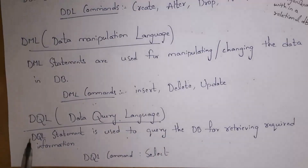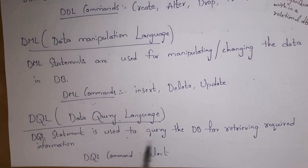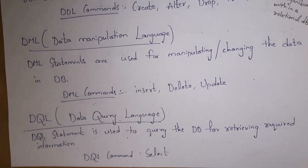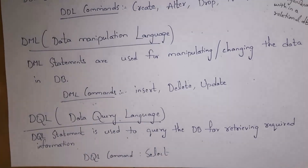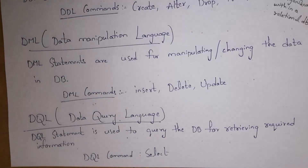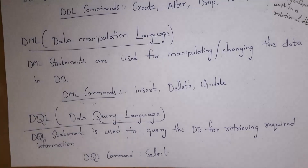DQL stands for Data Query Language. A query is nothing but a question — whatever code we write using Structured Query Language is called a query. DQL statements are used to query the database for retrieving required information. For example, to access any information from the database, you use the SELECT command, which is a DQL command.